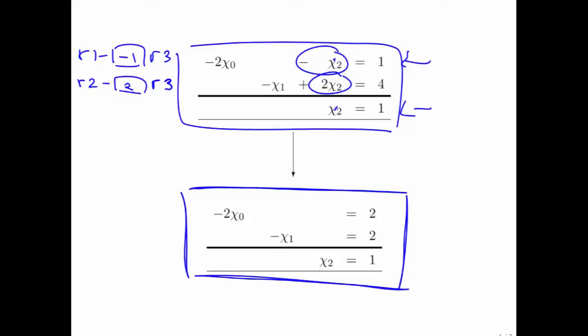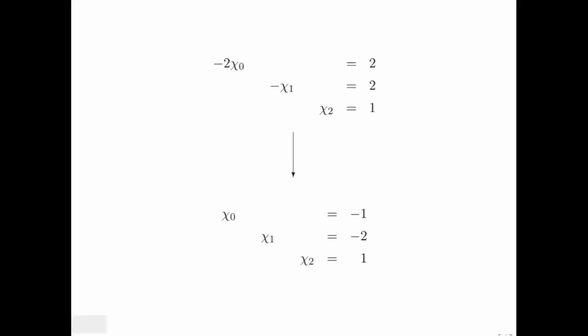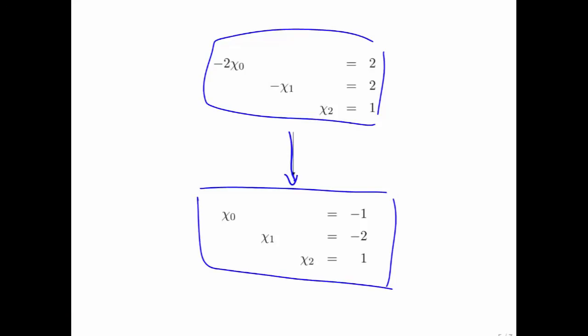Now, this is kind of nice because you're starting to see that this is quite easy to solve. But actually, we're going to do one more step and we're going to say, how can we transform this system into this system right here, which is particularly easy because you can just read off what chi zero, chi one, and chi two must be.